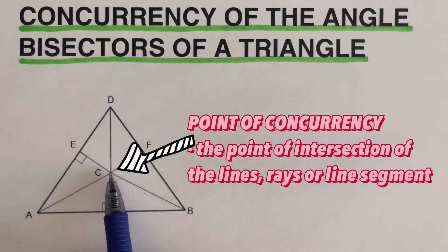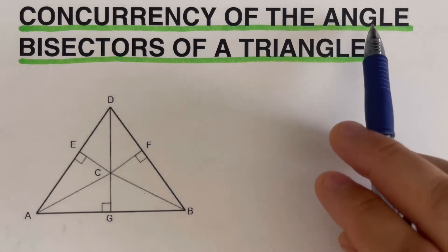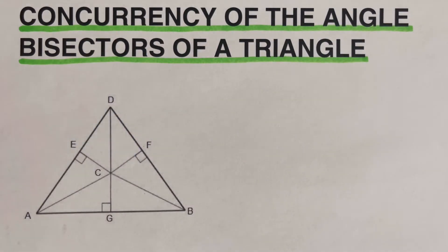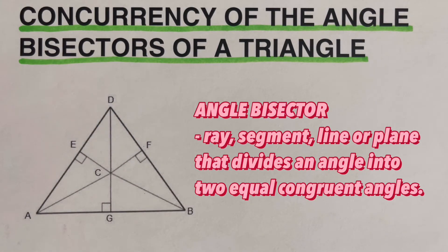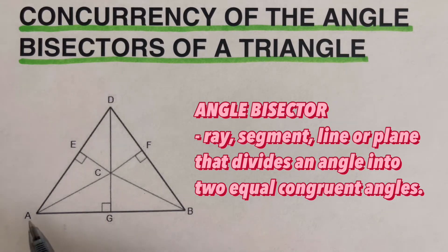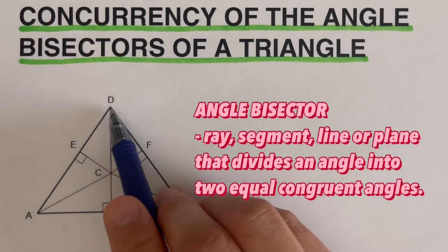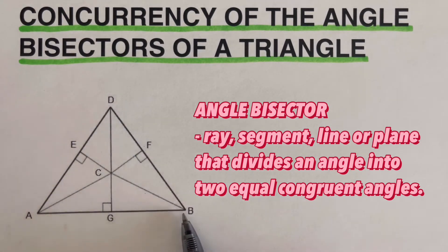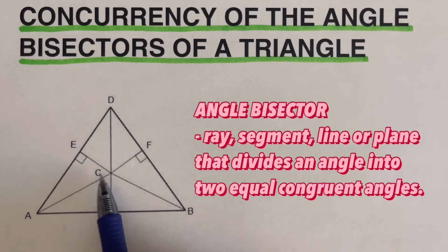The other term we have here is angle bisector. An angle bisector is defined as the ray, segment, line, or plane that divides an angle into two equal congruent angles. In this figure, our segments AC, DC, and BC are angle bisectors.